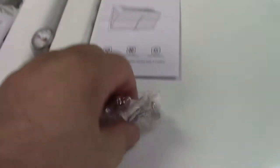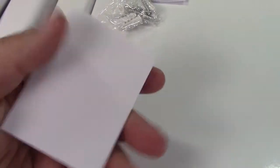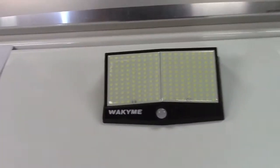In the box, you get the user manual. They give you screws and wall anchors. Double-stick tape pad right here. So you get four of these, four of these, and the light itself.